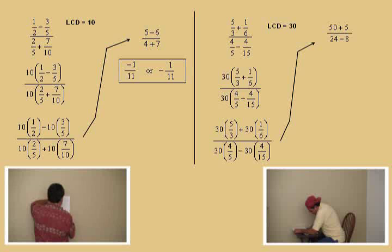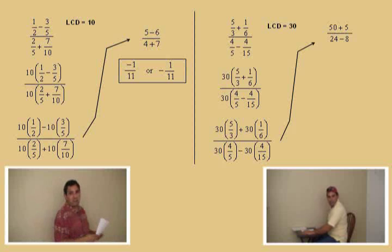5 goes into 30 six times. 6 times 4 is 24. Very nice, Charlie. Now, you've got one more. Bring us home. 15 goes into 30 two times. 2 times 4 is 8. Very nice. So there it is. The fractions are gone.